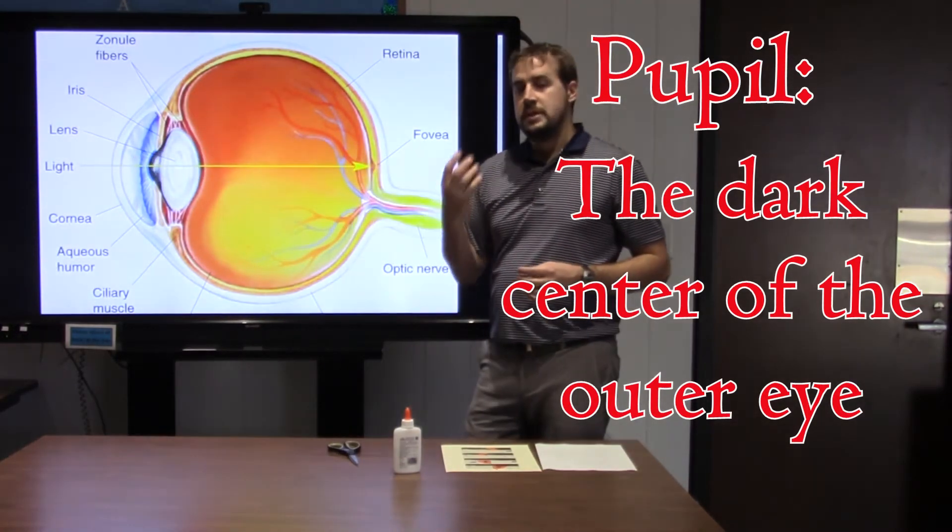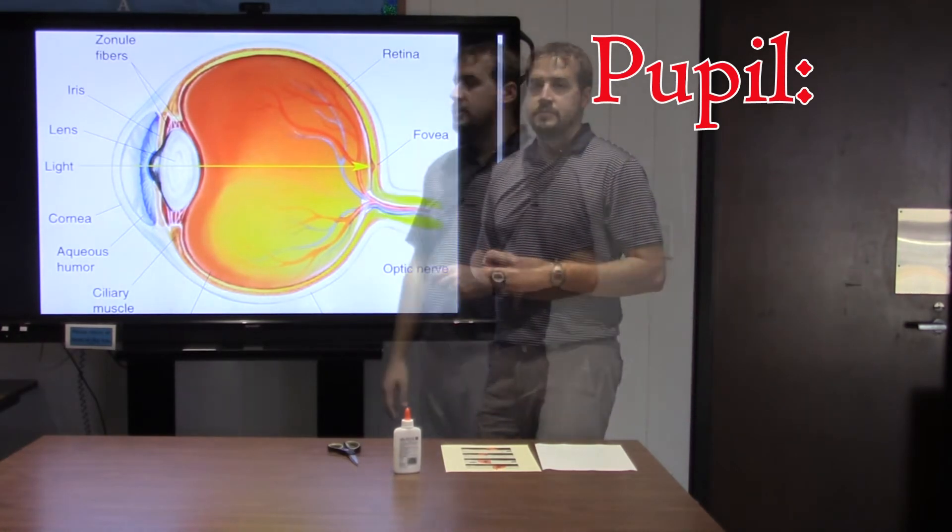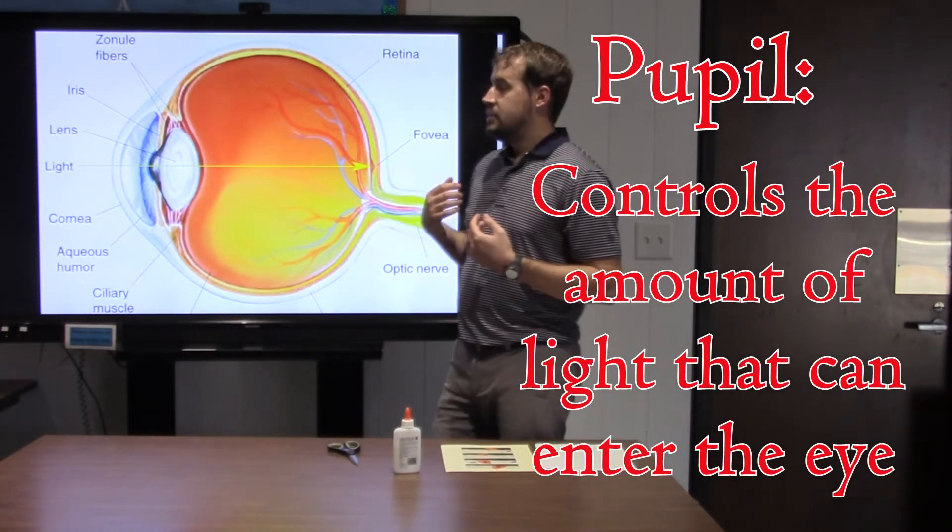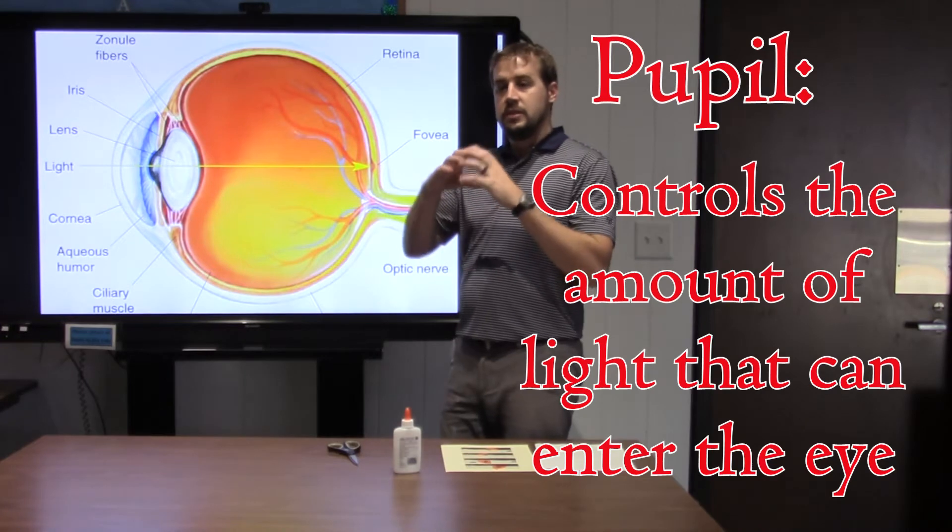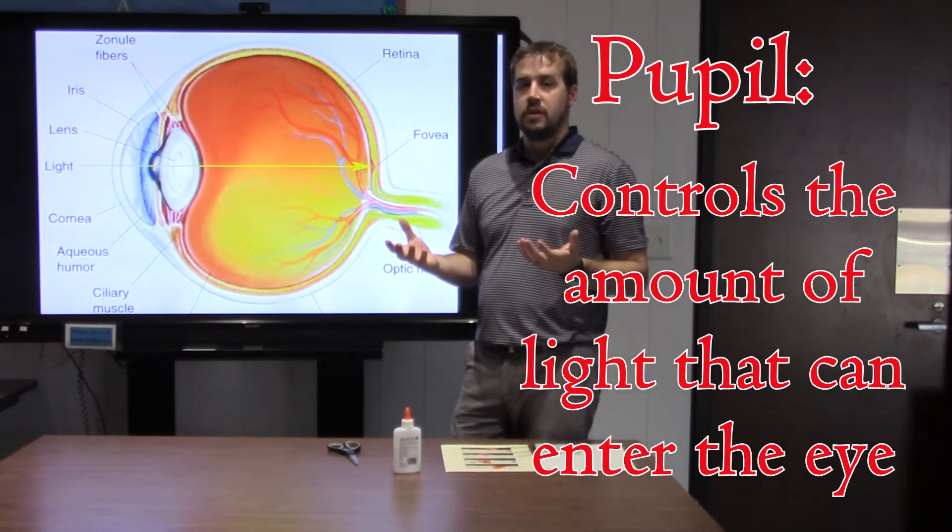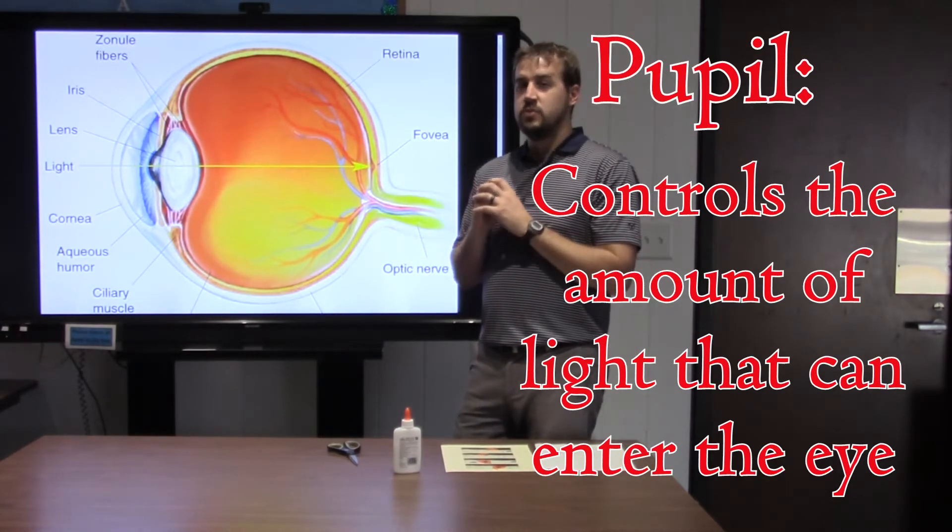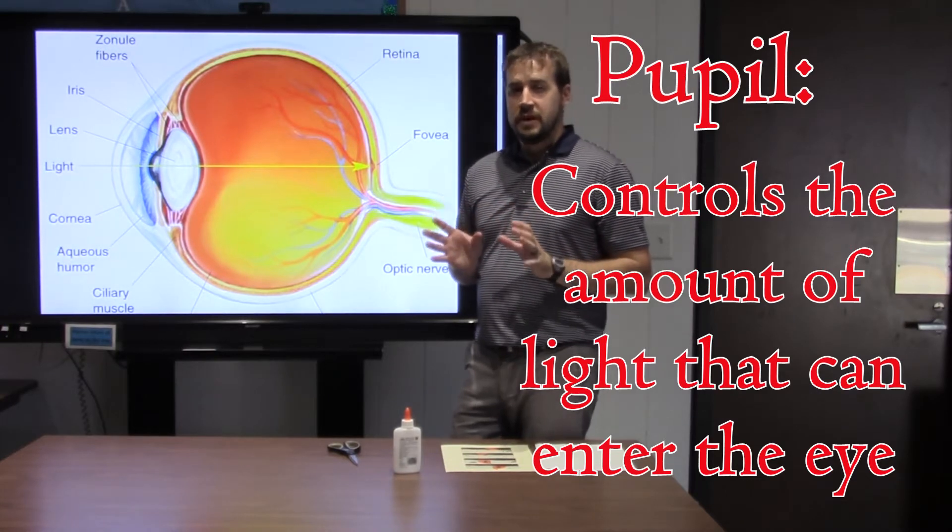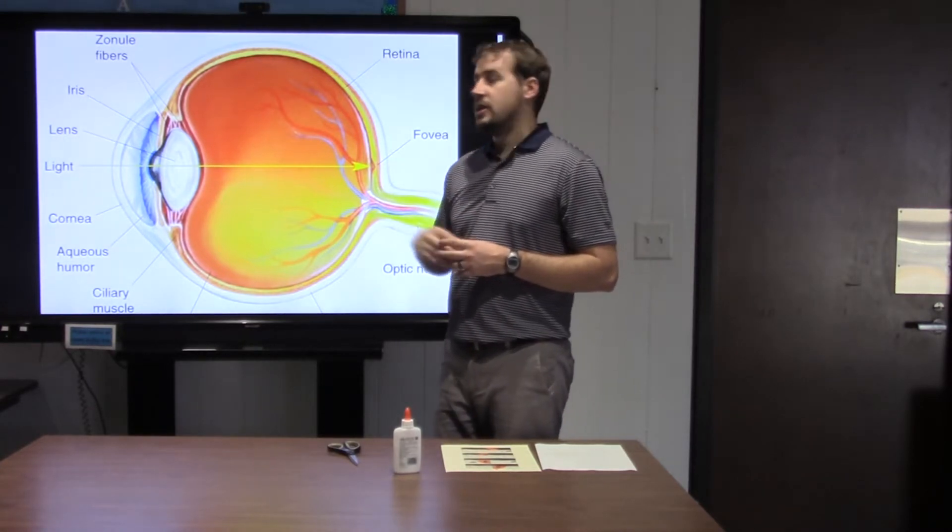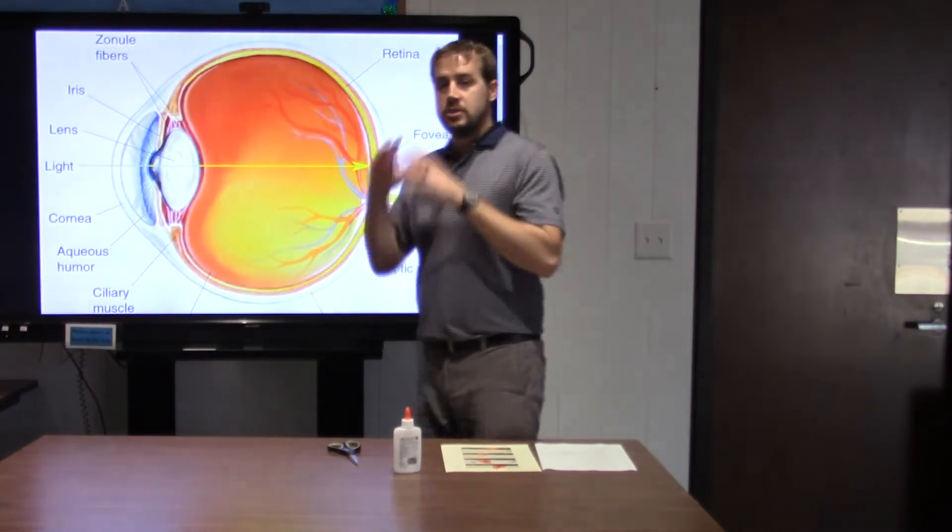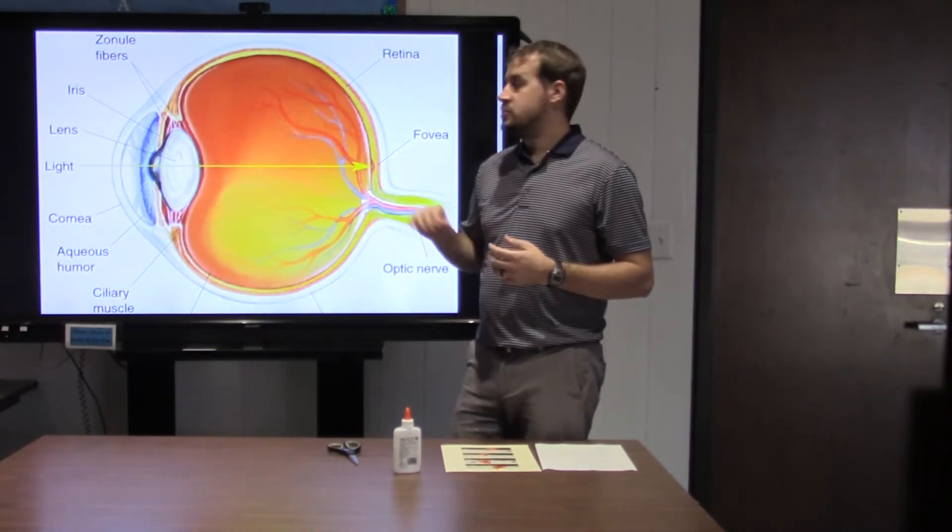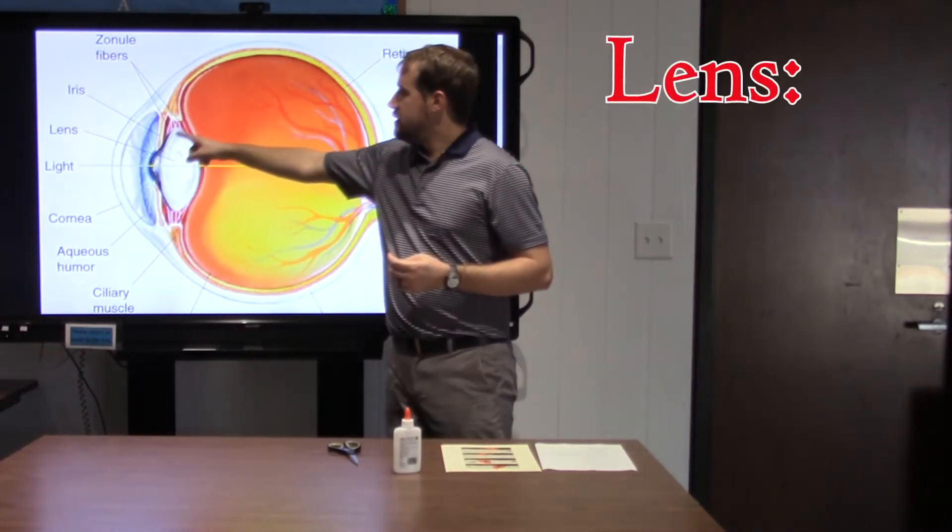Now, the pupil actually controls how much light gets into the eye. As you've probably seen, your pupil can get larger when it's dark out to allow more light into your eye so you can see better in the dark. And it also gets smaller when it's really bright to allow as little light as possible in so that you don't hurt the inner parts of your eye. And your iris, that ring, controls the size of the pupil in response to the light.